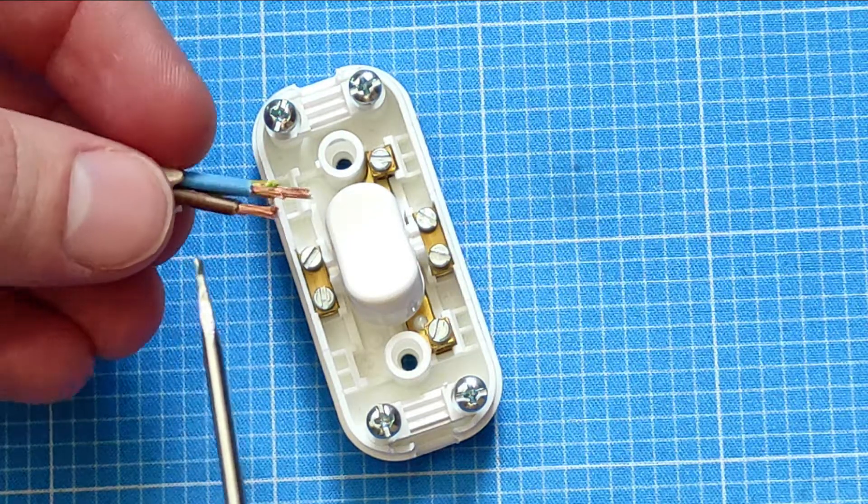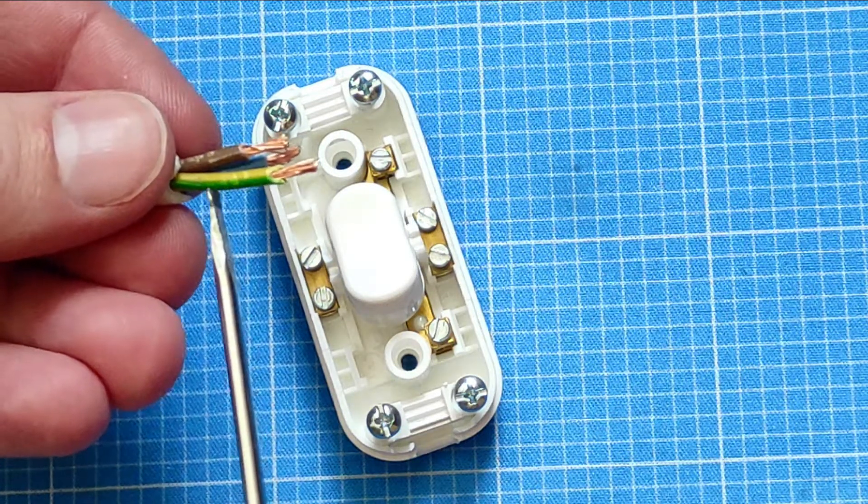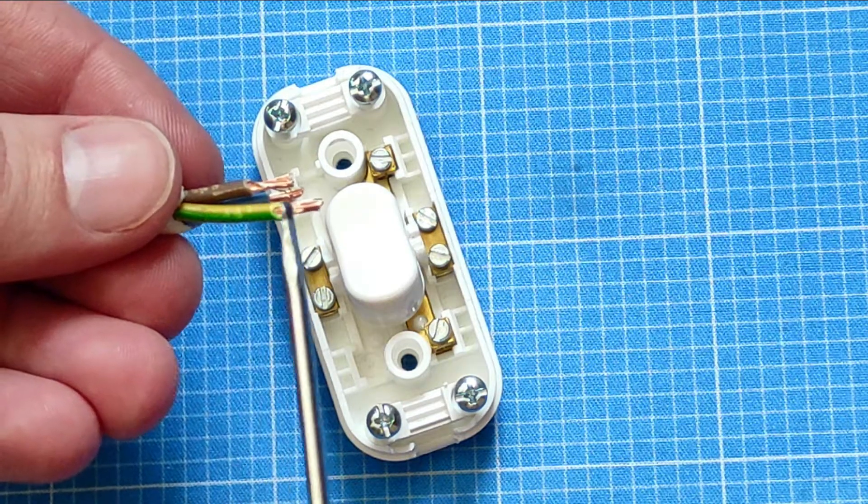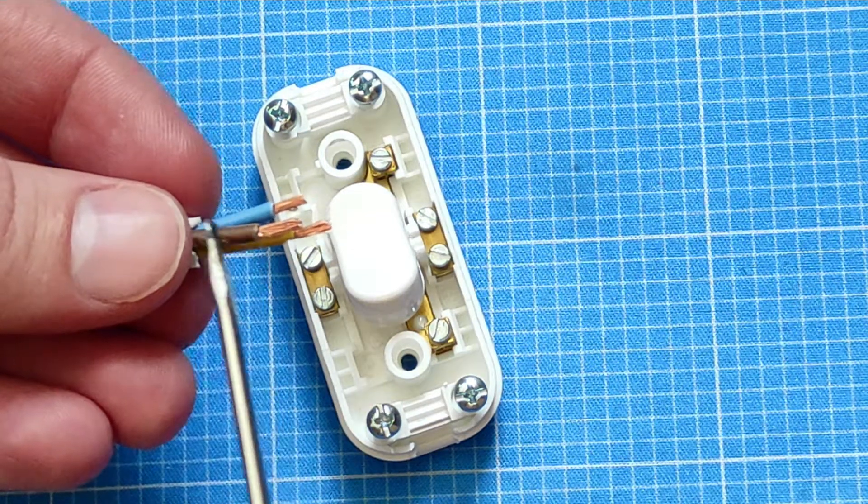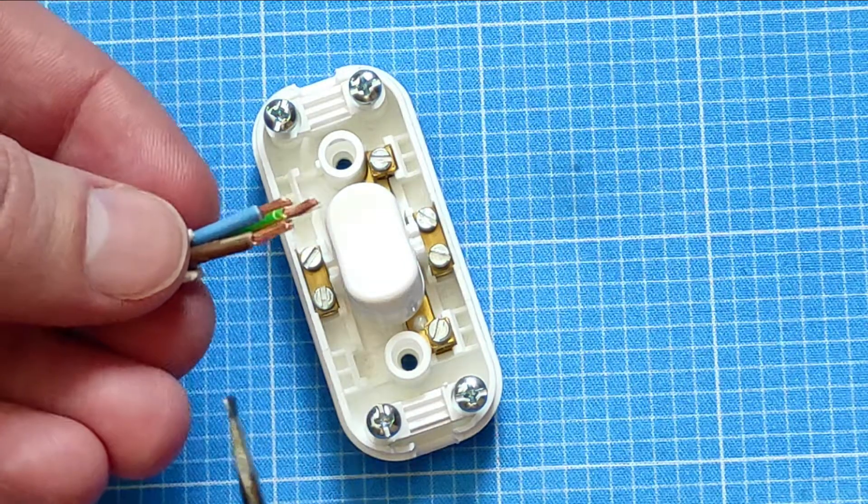Here they are. In many parts of the world they are blue, brown, and green-yellow. The green-yellow is ground, the brown is the live, and the blue is the neutral.